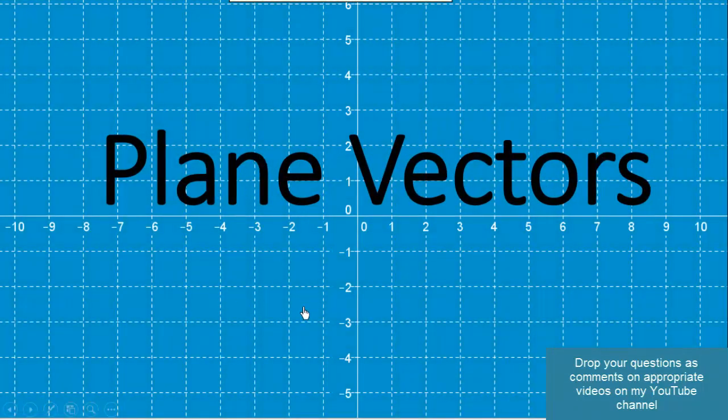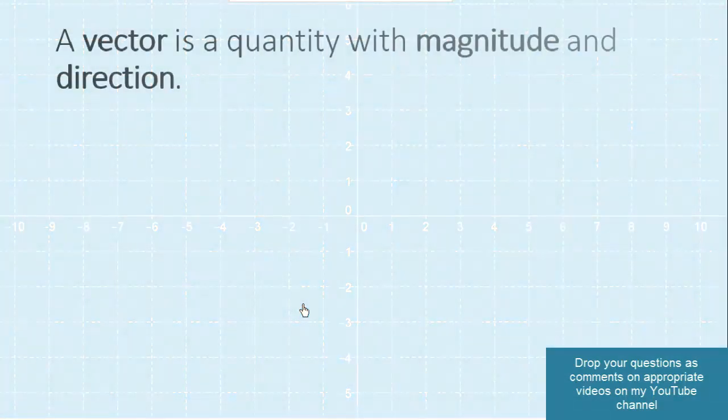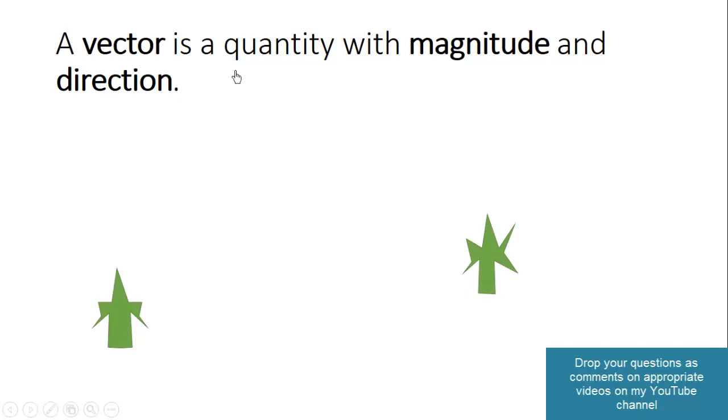Print vectors. A vector is a quantity with magnitude and direction.